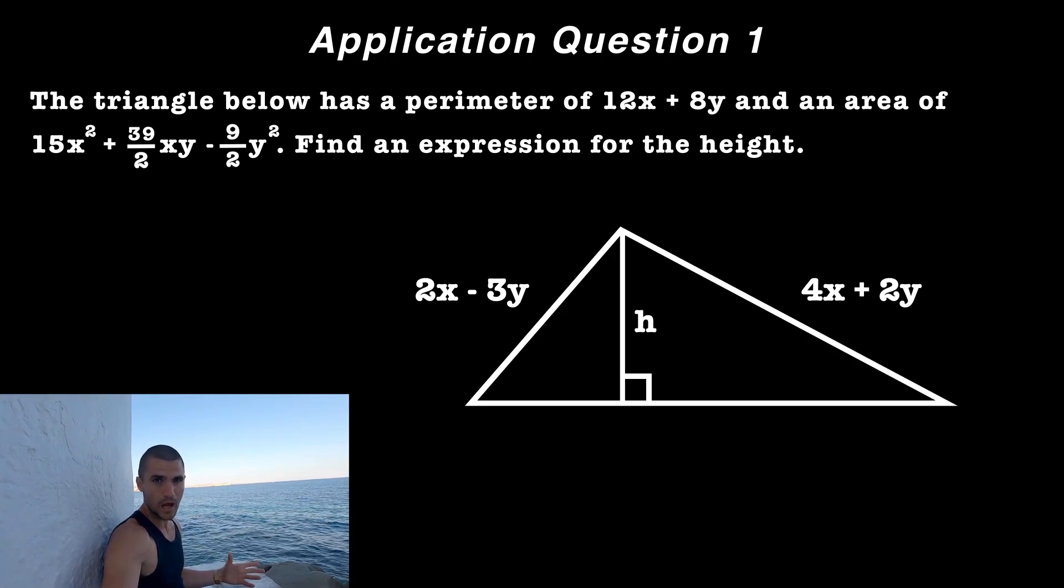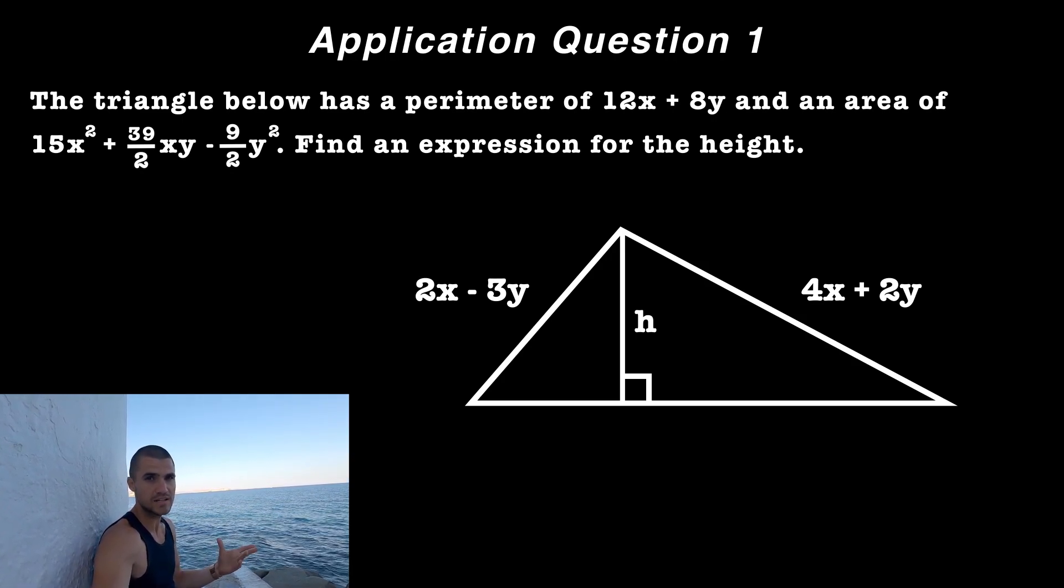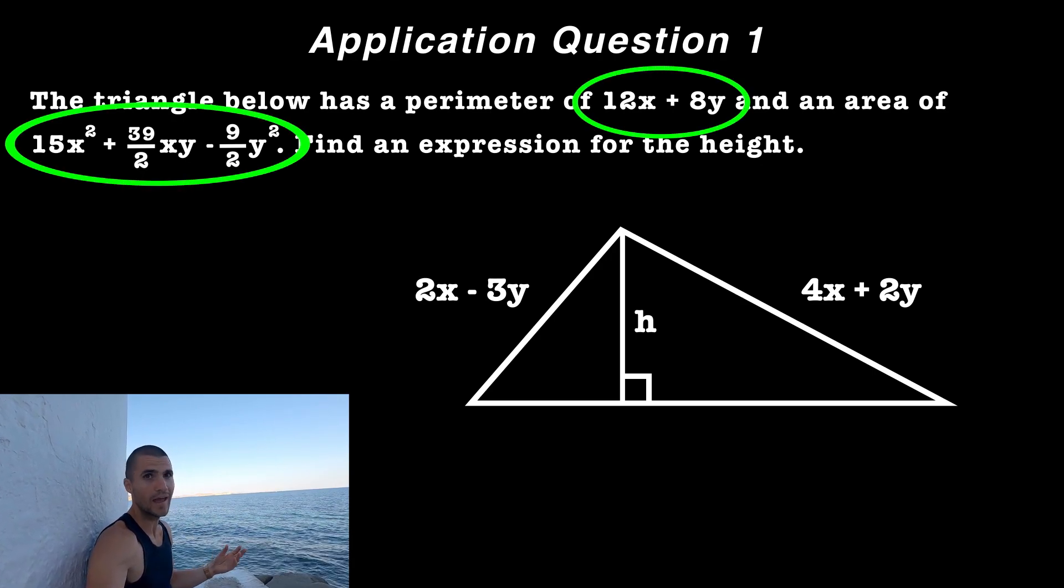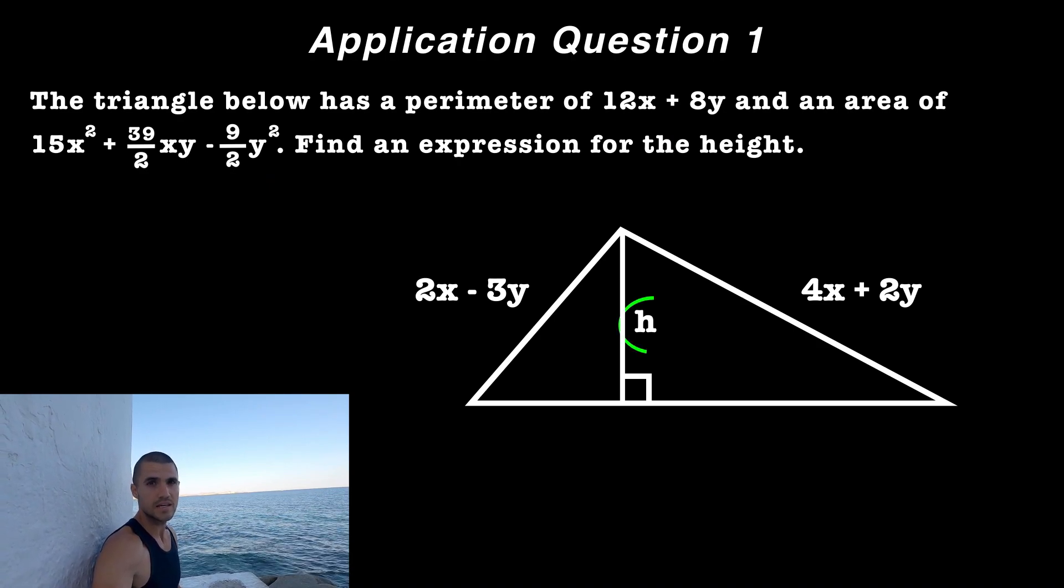So in this particular problem, we're given a triangle. We're given two expressions for the sides of the triangle, two of the three sides. And we're also given expressions for the perimeter and the area. And what they're asking us to find is the height.